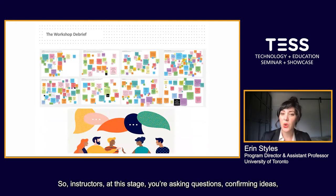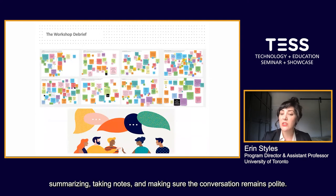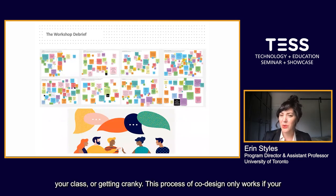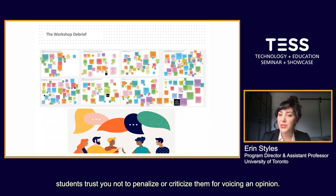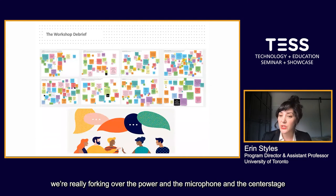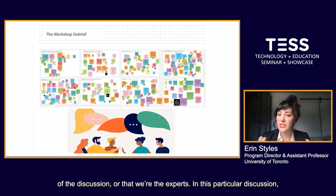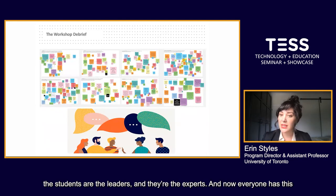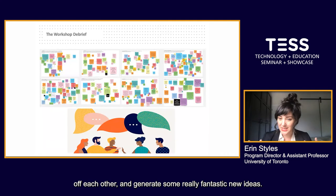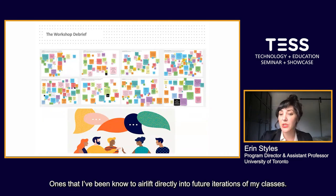Instructors at this stage: you're asking questions, confirming ideas, summarizing, taking notes, and making sure the conversation remains polite — but make sure you're not driving the discussion, defending aspects of your class, or getting cranky. This process of co-design only works if your students trust you not to penalize or criticize them for voicing an opinion. The goal here is an almost radical collegiality. As instructors, we're really forking over the power and the microphone and center stage to our students, letting go of the notion that we're in charge of the direction of the discussion or that we're the experts. In this particular discussion, the students are the leaders and the experts, and everyone has the chance to elaborate on comments and generate some really fantastic new ideas.